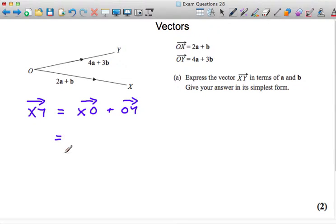Now we know the vector OX is 2A plus B. So the vector XO is just the negative of that, so it's equal to minus 2A minus B. Remember we're meant to underline vectors when we can't write them in bold. Plus OY, so that's plus 4A plus 3B.